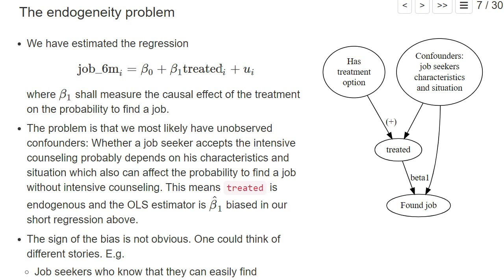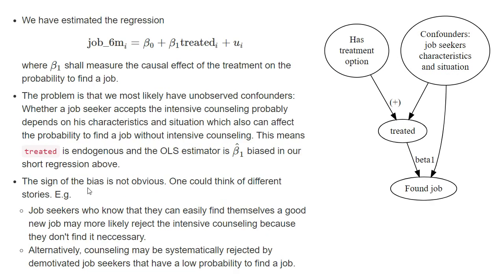It can correlate with u_i, and so the OLS estimator β₁ hat is only a biased inconsistent estimate of the true causal effect. The sign of the bias is also not obvious.